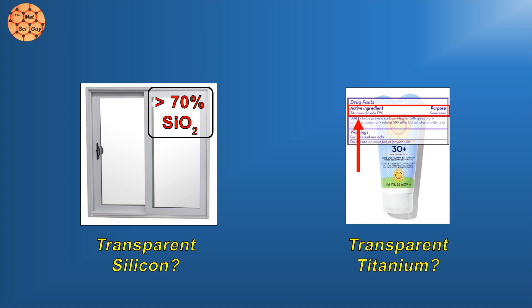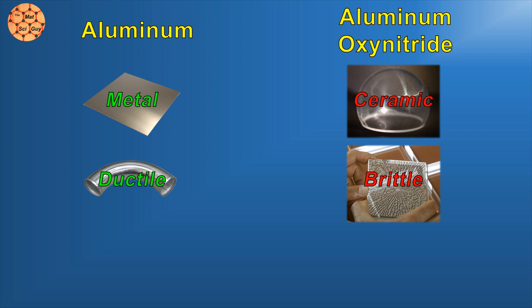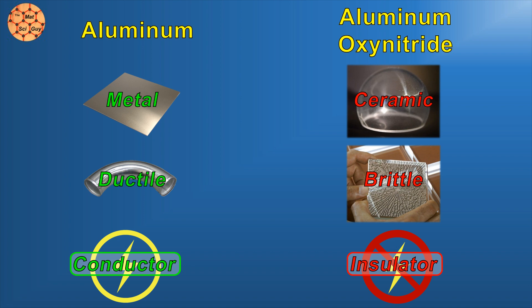The distinction between metals and metal oxides isn't just a pedantic one, because their properties are completely different. Aluminum oxynitride is a ceramic material. It's incredibly strong, but it's still going to shatter like glass rather than bending like aluminum. It's also going to be an electrical insulator since there aren't the free electrons of aluminum.